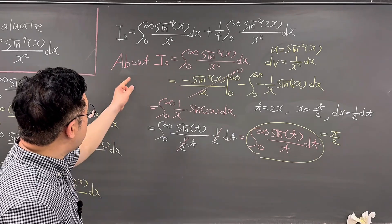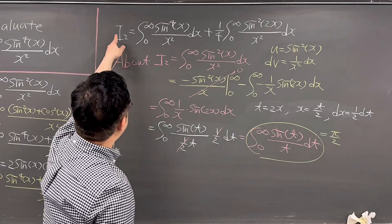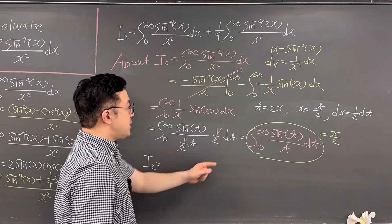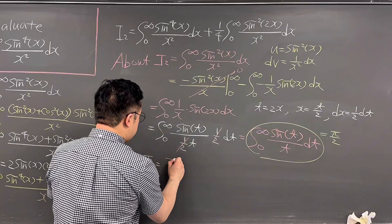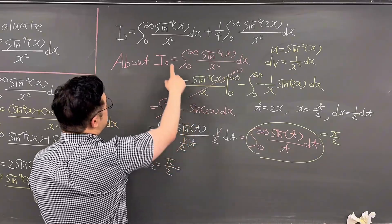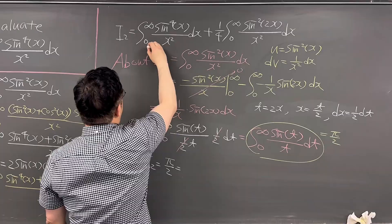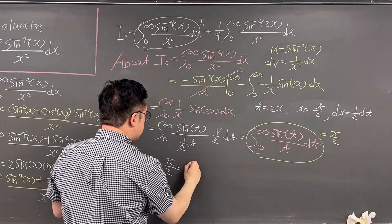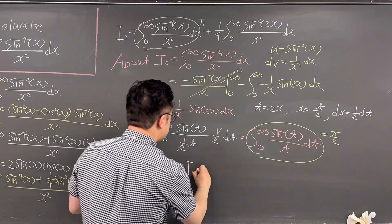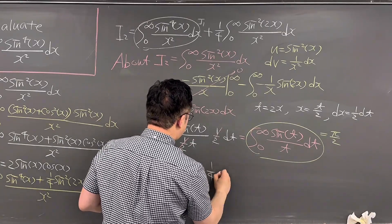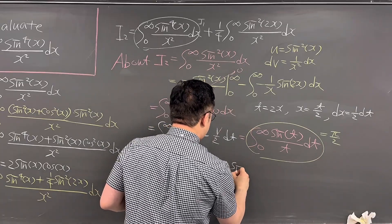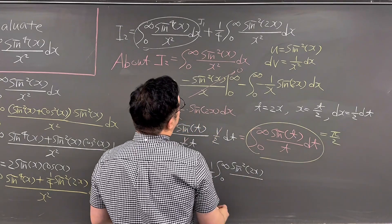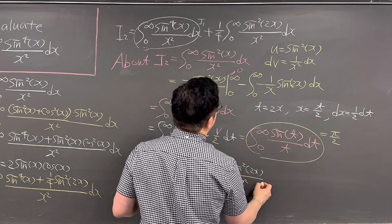So going back to I2 and that expression: I2 turns out to equal π/2. So we now have π/2 equals I1 — the one we're looking for — plus 1/4 times the integral from 0 to infinity of sine squared of 2x over x squared dx.